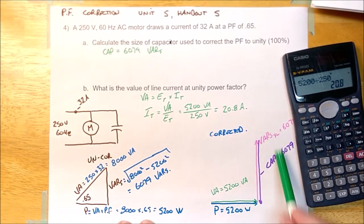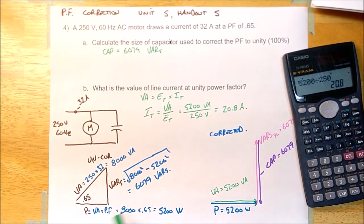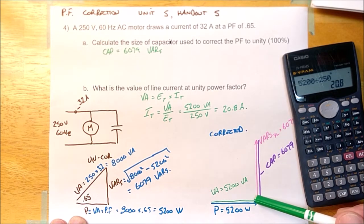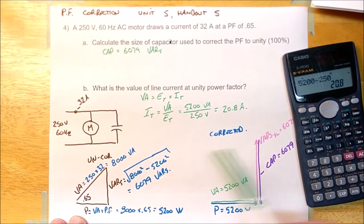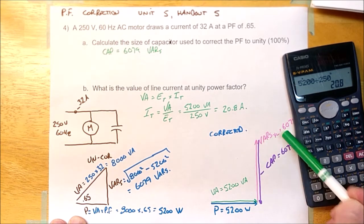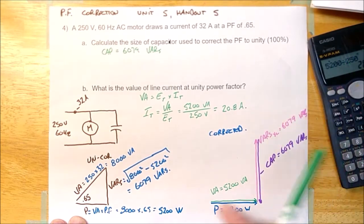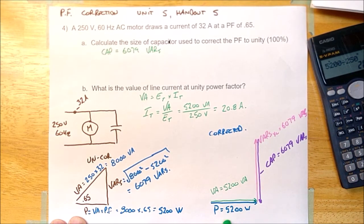The way you draw this power phasor diagram is you start with the true power because it is going to be the same as the true power was before correction. So that blue line first. Second line is this VARs. It is all the reactive power due to the inductor. Then you can add your cap. It's going to be equal to that. And then you can add your VA. It is going to be equal to that.